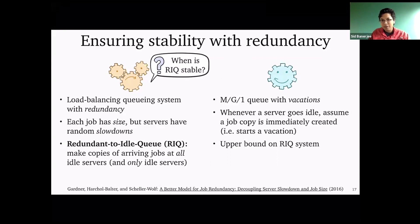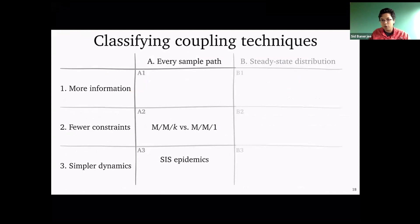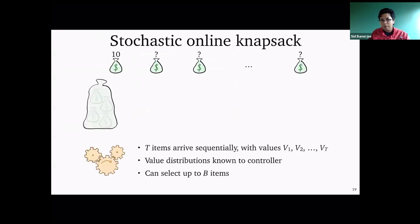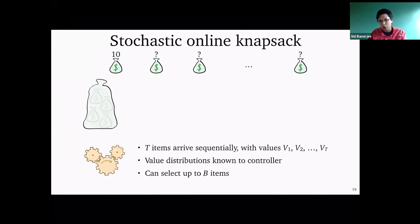Now we start talking about control. We've looked at couplings with simpler dynamics — but how can we use these coupling techniques when we actually want to solve control problems? For pretty much the rest of this talk, the system I'm going to focus on is the stochastic online knapsack. This is exactly the knapsack problem, except all the jobs are not available beforehand — you learn about job values as you start processing them.